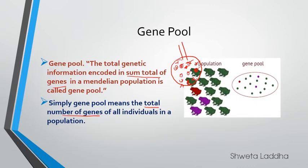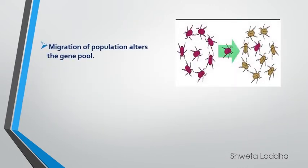For example, in this diagram you can see there are different frogs — most of them are green, few are purple, one is brown. Each one is having its own genes, and when we calculate the total number of genes present in that population, we term it as the gene pool.